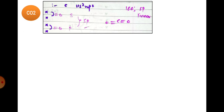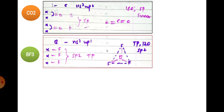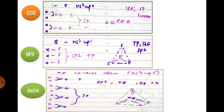Some additional examples: CO2 has carbon as central atom with ns2np2 — four electrons. Two oxygens each require two electrons, so four electrons are shared — two bond pairs, zero lone pairs, giving sp hybridization and a linear structure. BF3 has boron with ns2np1 — three electrons shared with three fluorines. Three bond pairs, zero lone pairs, sp2 hybridization, trigonal planar, 120° bond angle. XeO4 has xenon with eight electrons shared with four oxygens (divalent), giving four bond pairs, sp3, regular tetrahedral.